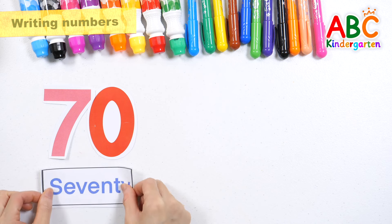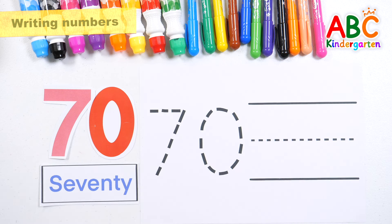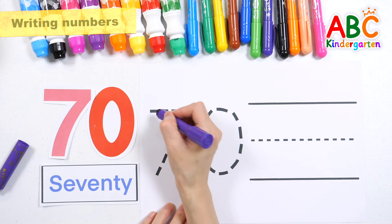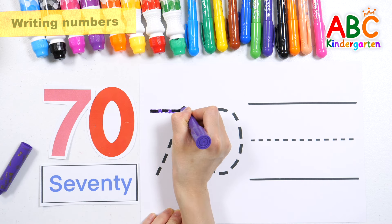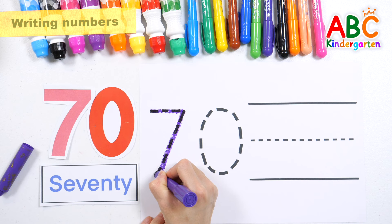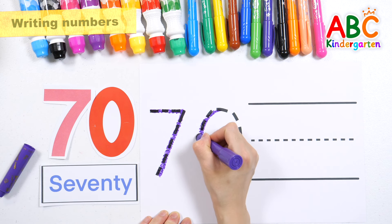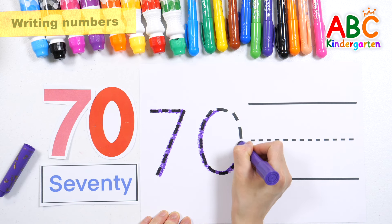Let's read the numbers! 70. Try writing along the dotted line. This old man, he played seven. He played knick-knack up in heaven. With a knick-knack, patty-whack, give a dog a bone. This old man came rolling home. 70.